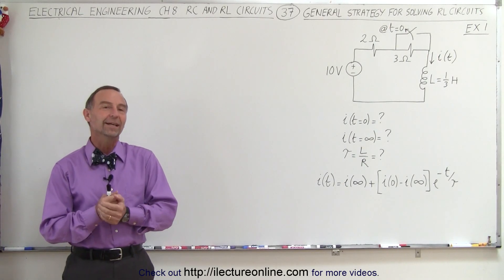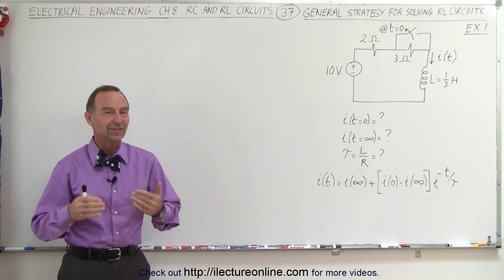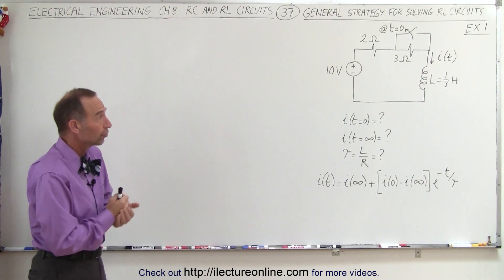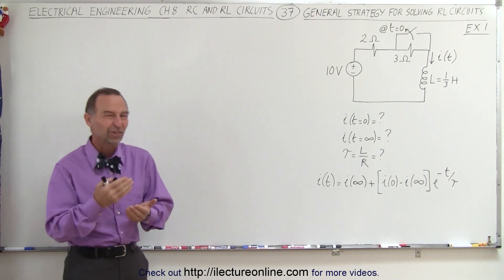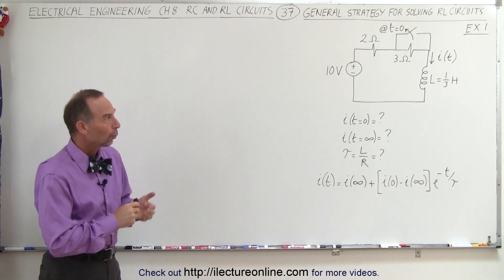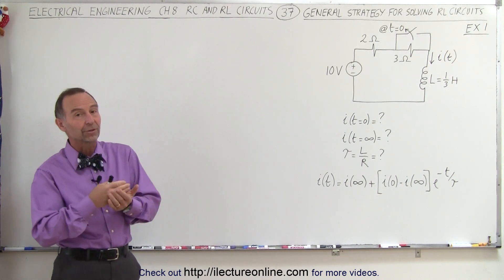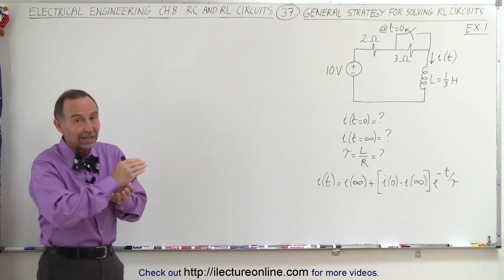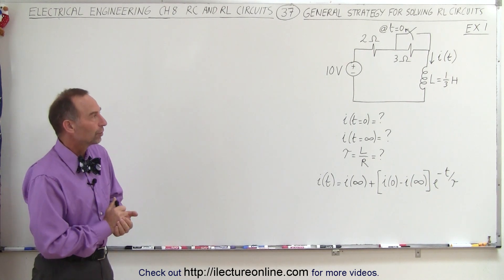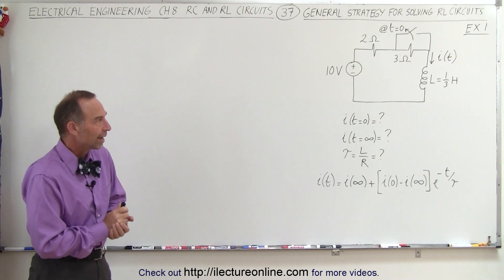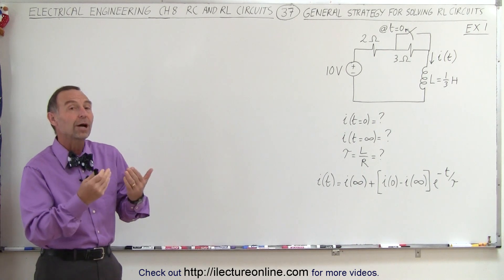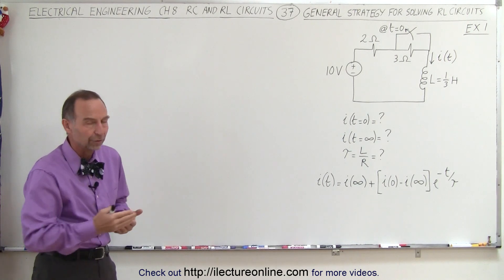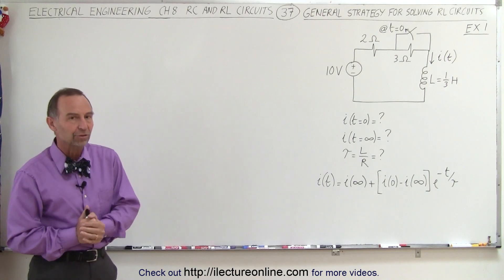Welcome to our lecture online. Now that we've seen how to approach a general RL circuit — a resistor and inductor circuit — when we have either an input signal at time equals zero or a switch setting that changes the current in the circuit at time equals zero, what we're trying to do now is find an expression for the current through the inductor as a function of time.